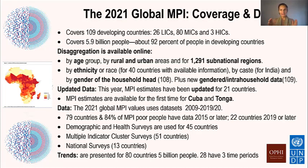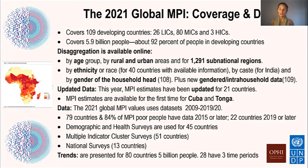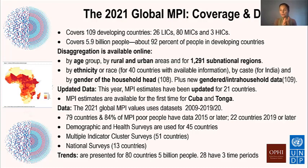The global MPI datasets are the most recent we can obtain. We're very grateful to the Demographic and Health Surveys, which we use for 45 countries, the Multiple Indicator Cluster Surveys we use for 51 countries, and national surveys from 13 countries. Without these high quality data we could not do this work. The most up-to-date data are 2019-20, and 84% of poor people have data from 2015 or later.